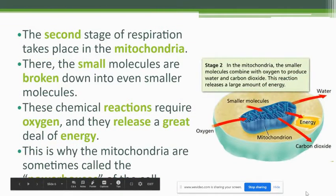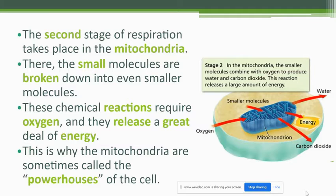The second stage of respiration happens in the mitochondria. Those smaller molecules enter the mitochondria and get broken down into even smaller particles. Through that process, chemical reactions take place that require oxygen this time. As those reactions occur, a great deal of energy is released. It's a more complex process — more materials are being combined, resulting in a greater reaction and release of energy. This explains why the mitochondria are sometimes called the powerhouse of the cell, because this is where energy is released for the cells to use.